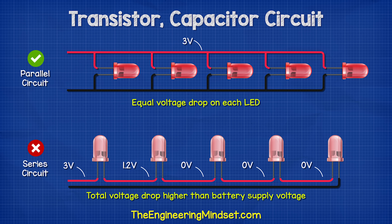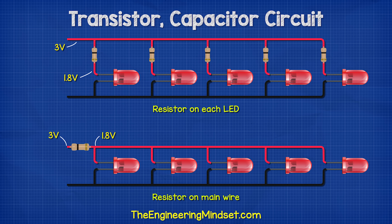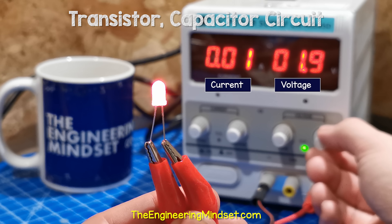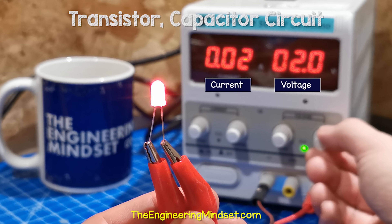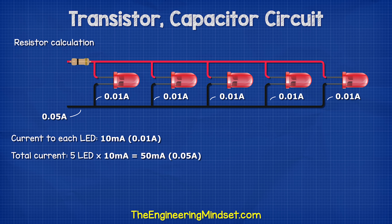We will need to connect these in parallel so that they all get the same voltage. If they were in series, the voltage drop would be too much. The forward voltage of the LED is around 1.8 volts and we have a 3 volt supply, so we will need a resistor. We can place a resistor before each LED or we can use a single resistor to limit the total current. For this simple circuit, we will use a shared resistor. As the voltage to the LED varies, the current and brightness change also. We don't want the LEDs to shine too brightly, so we will aim for around 10 milliamps per LED. As we have five LEDs, these will add together to get 50 milliamps.